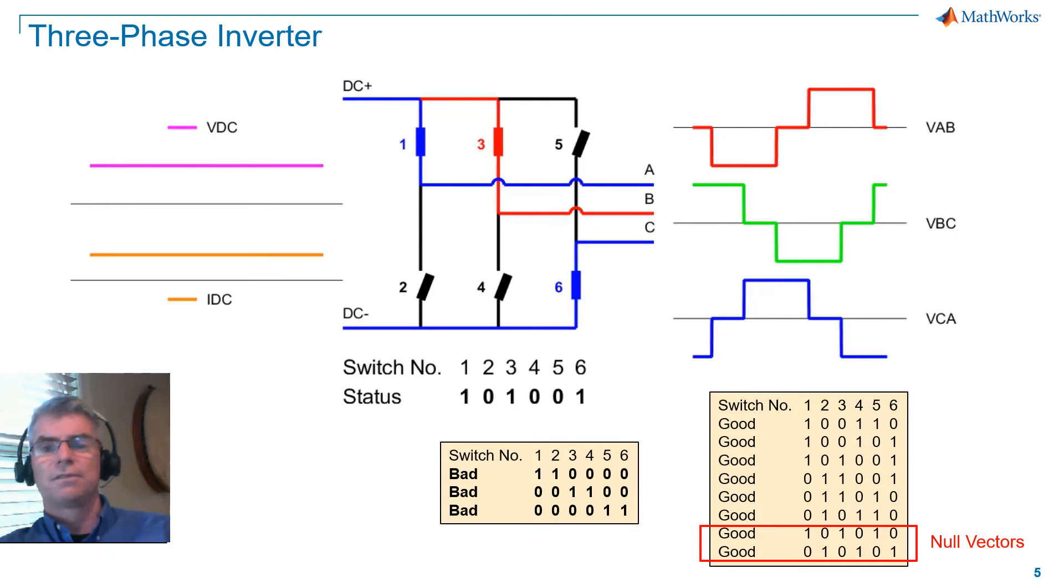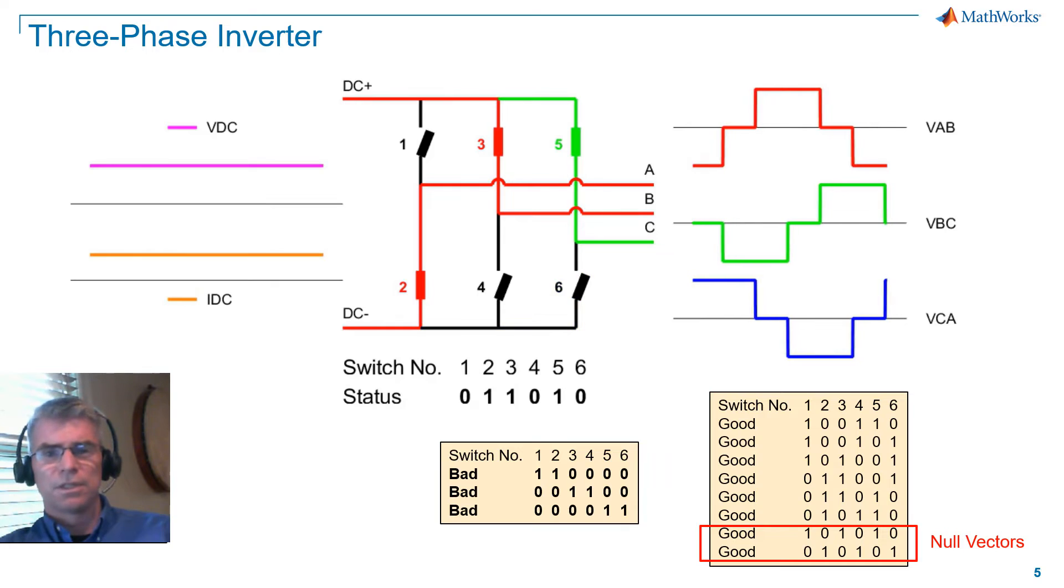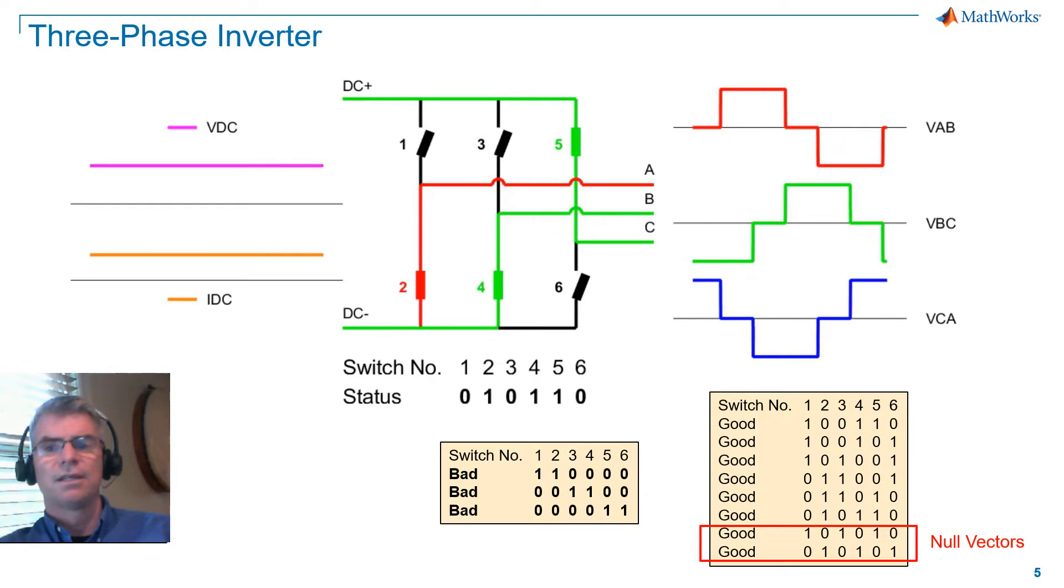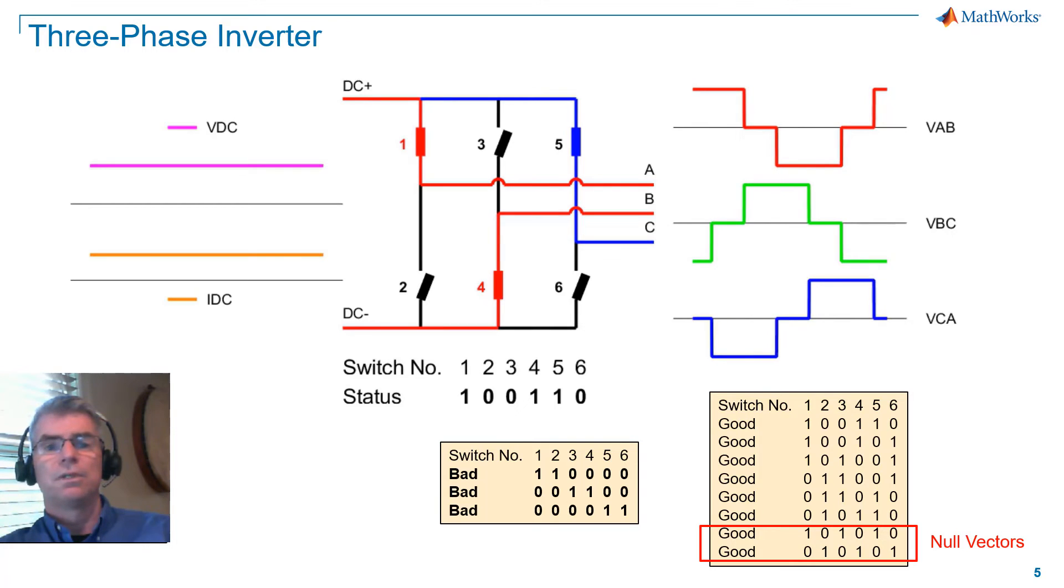Now, notice that the null vectors for the three-phase system are not being used in the switching sequence we're showing here. We can actually achieve zero voltage in a phase by connecting two upper or two lower switches together, but notice that when this happens in a three-phase system, we do not achieve zero current.